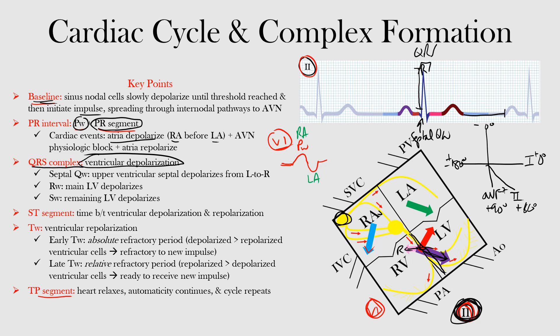The last portion — the remaining portion of the left ventricle — then depolarizes. The vector heads leftward, upward, and posteriorly — heading away from lead two — and that's where we get our S wave. This terminal portion is our S wave, a negative deflection because it's a depolarization wave heading away from lead two. So again: first vector is left-to-right septal depolarization giving our Q wave, second vector is the main left ventricle giving our R wave, and the third vector is the remaining left ventricle giving our S wave.